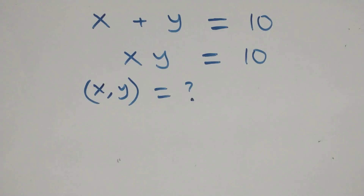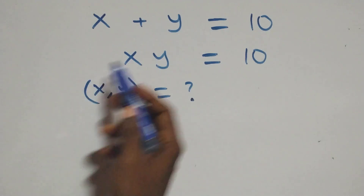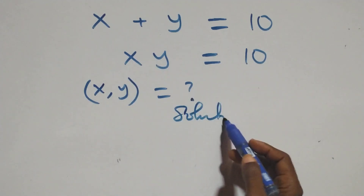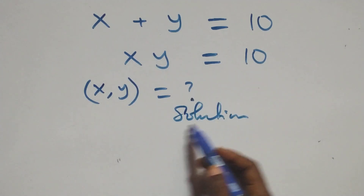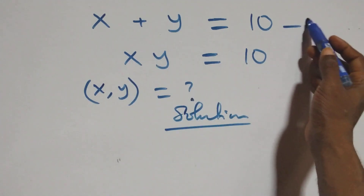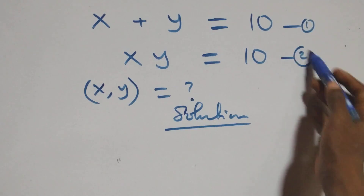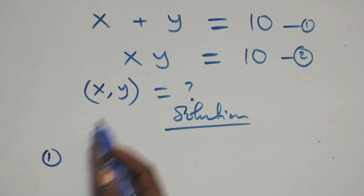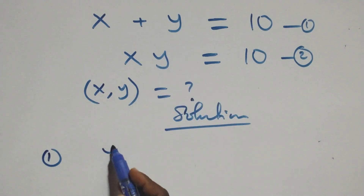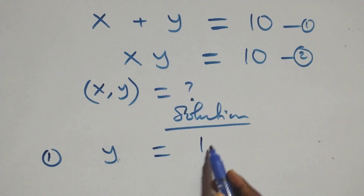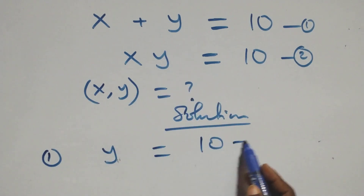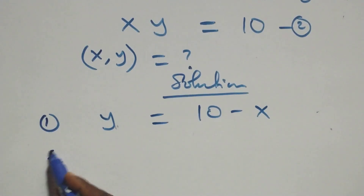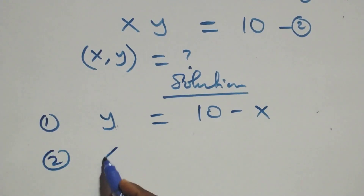Hello, you are welcome. We will solve this algebra equation. We can label this as equation 1 and this as equation 2. From equation 1, we make y the subject, so y equals to 10 minus x.